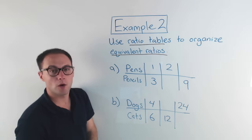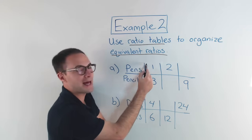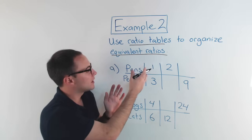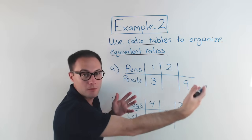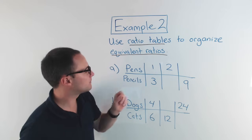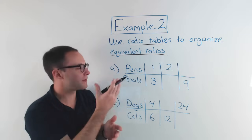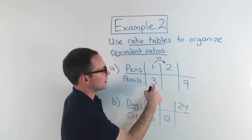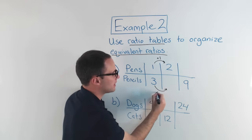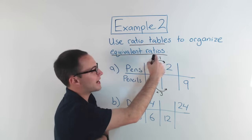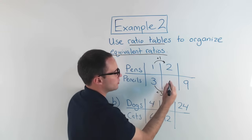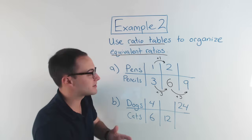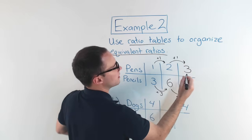With part A, you can see we're comparing pens to pencils. For every one pen, we have three pencils, so the ratio of pens to pencils is one to three — that's in simplest form. But we can make equivalent ratios by adding on more. If I have two pens, how many pencils would I have keeping the same ratio? If I add one pen, I add three pencils, so it would be two to six. Then adding one more pen and three more pencils gives three to nine.